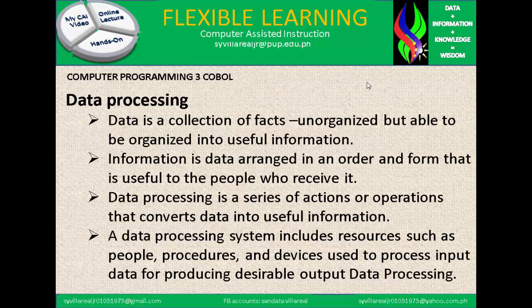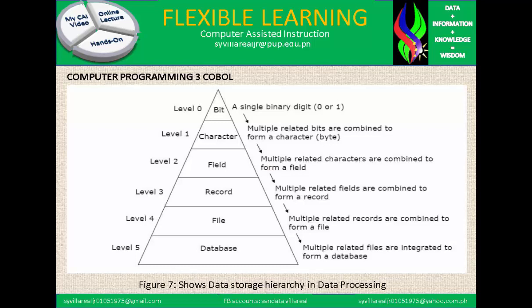Data processing: data is a collection of facts, unorganized but able to be organized into useful information. Information is data arranged in an order and form that is useful to the people who receive it. Data processing is a process of actions or operations that converts data into useful information. A data processing system includes resources such as people, procedures, and devices used to process input data for producing desirable output. Figure 7 shows the data storage hierarchy in data processing.